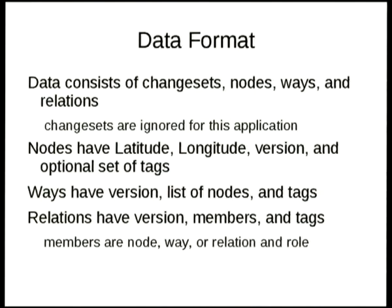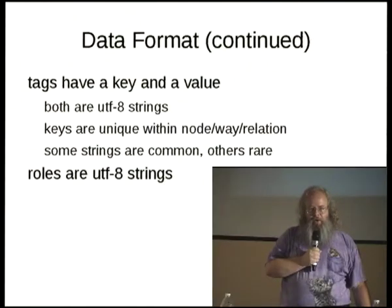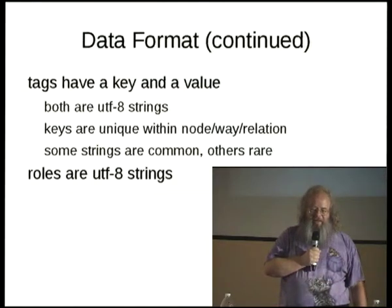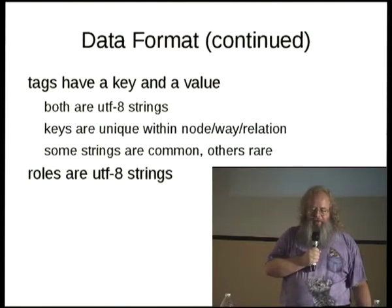Relations are used for things like turn restrictions and other complex things — exactly what they're used for doesn't really apply to this talk. All those pieces of data have tags, which are a key and a value, both of which are free-format UTF strings. For example, a way can have highway=steps to indicate that it's a staircase. Some keys are unique within a node, way, or relation — you can't have two highway keys on the same way.